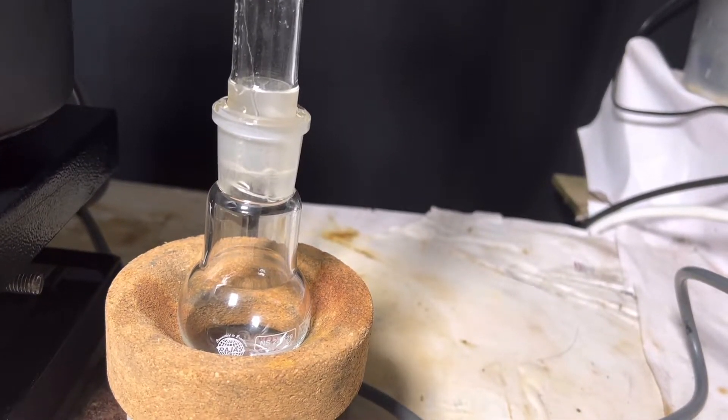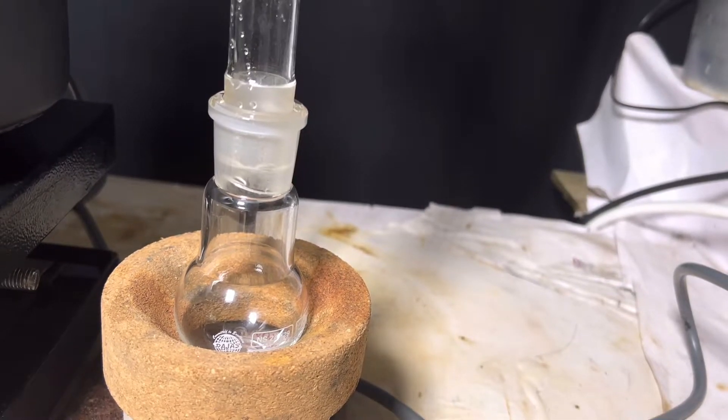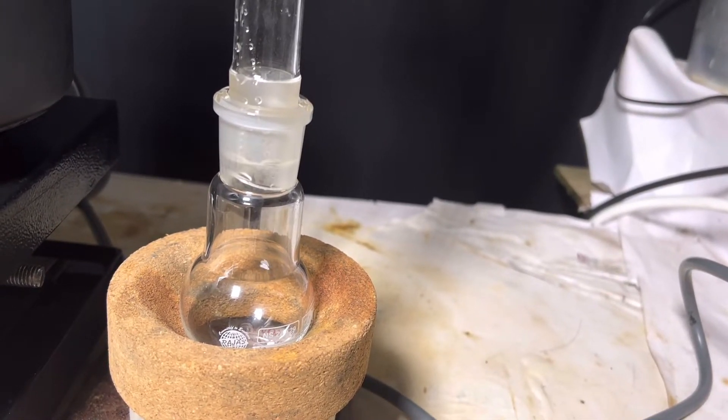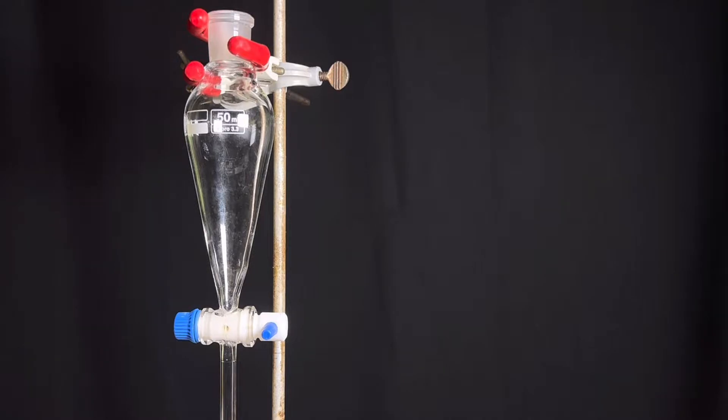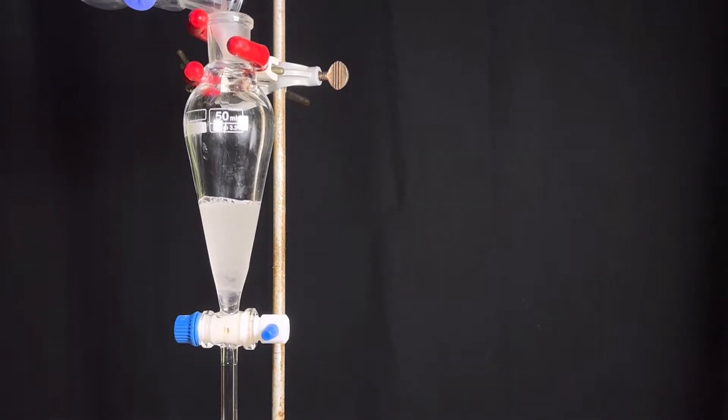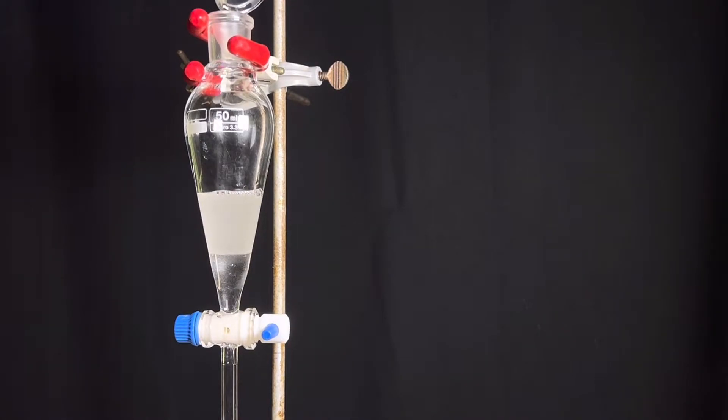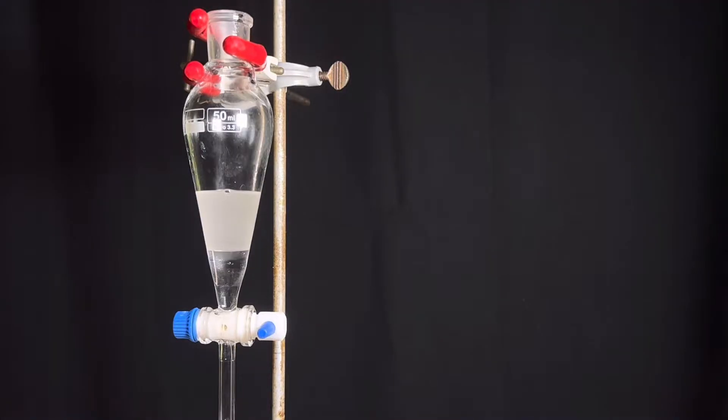The distillate contains crude cyclohexene. Now we will purify it. Transfer the distillate to a small separatory funnel. You will immediately notice two separate layers. The upper layer is our desired product cyclohexene, so the lower layer is discarded.